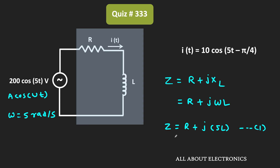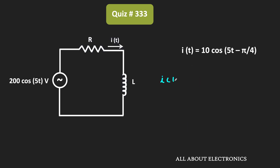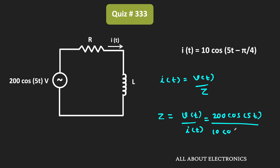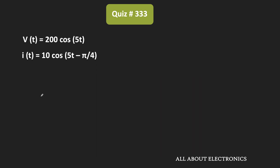That means if the impedance of the circuit is equal to Z, then this current I can be given as V divided by Z. We can also write this expression in the phasor form. Now, if we have a signal A cos(ωt + φ), then in the phasor form it can be written as A∠φ, where A is the amplitude and φ is the phase shift.